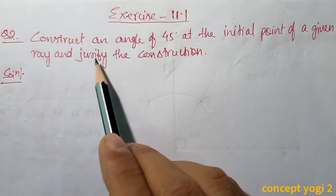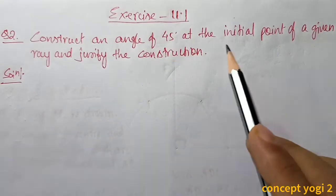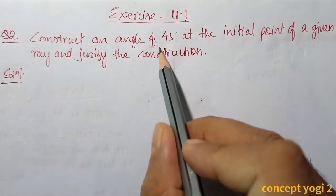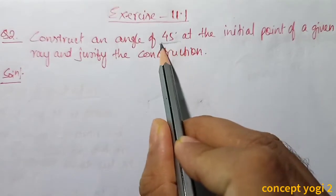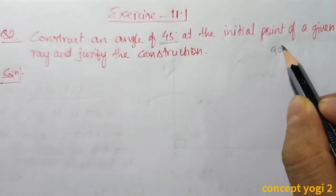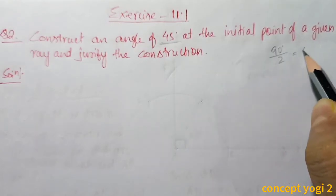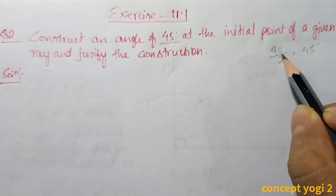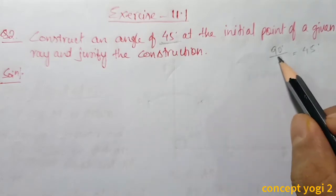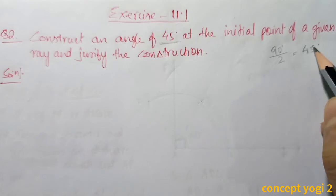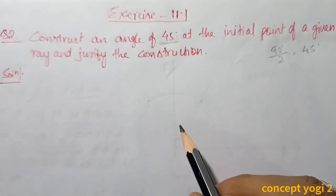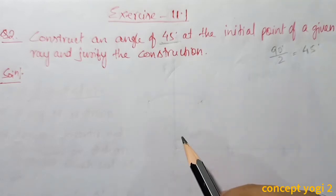Now question number 2: Construct an angle of 45 degrees at the initial point of a given ray and justify the construction. To draw 45 degrees, note that 90 divided by 2 equals 45. So first we will construct a 90 degree angle, and then bisecting the 90 degree angle will give us 45 degrees.